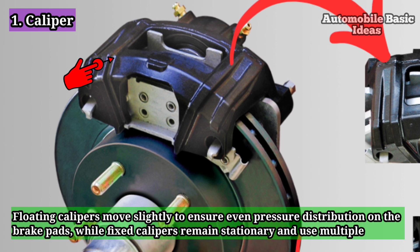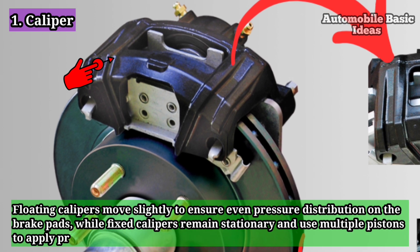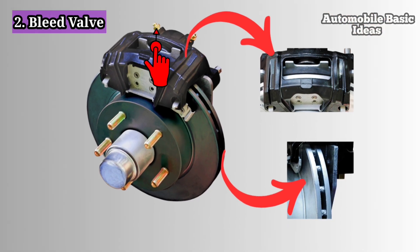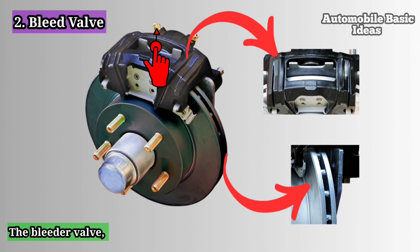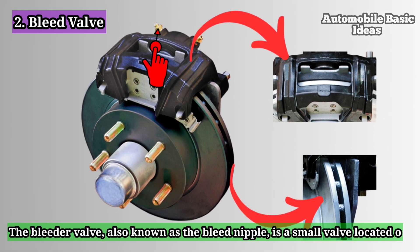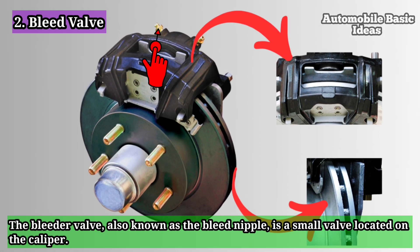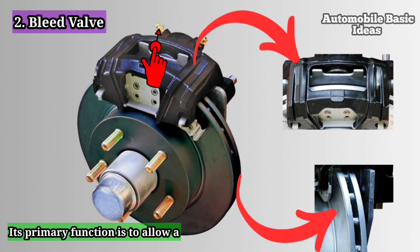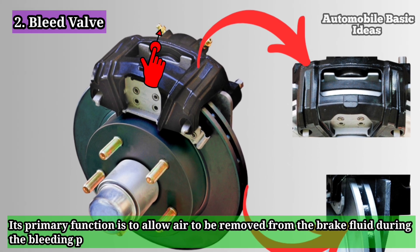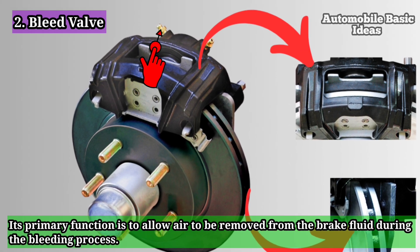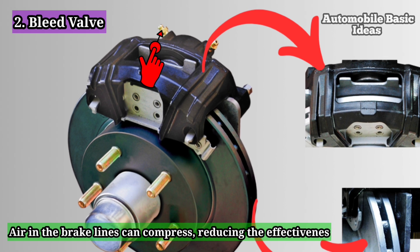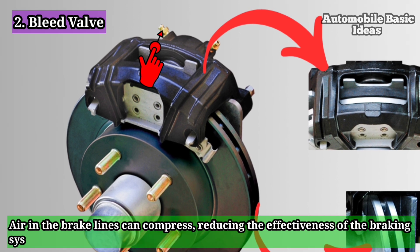Two: bleed valve. The bleeder valve, also known as the bleed nipple, is a small valve located on the caliper. Its primary function is to allow air to be removed from the brake fluid during the bleeding process. Air in the brake lines can compress, reducing the effectiveness of the braking system.